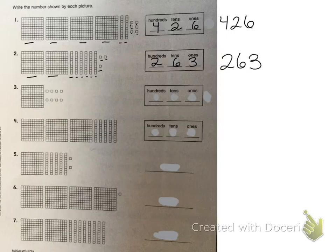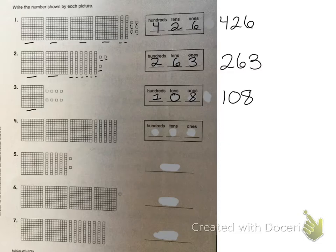On number three I have one hundreds block. I don't have any tens, so I'm going to put a zero to show I have no tens, and I have eight ones. So my number is one hundred eight. On the next one I have four hundreds blocks and five tens blocks. I don't have any ones, so I'm going to put a zero to show I have no ones blocks. So my answer is 450.